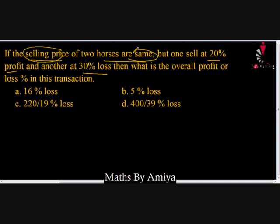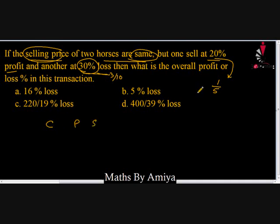The fractional value of 20% is 1/5 and the fractional value of 30% is 3/10. We use the ratios formula: cost price, profit, and selling price. For the first transaction, the cost price is 5 — the bottom is always the cost price.